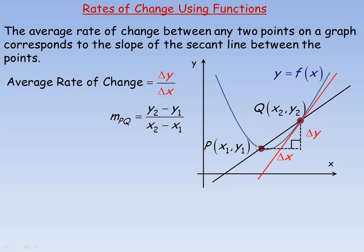The secant here is the line segment that joins P to Q, so it goes through the point P to Q. This would be the change in y between these two y coordinates, and delta x is the change in x from x1 to x2.